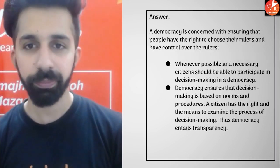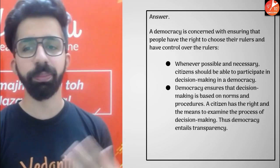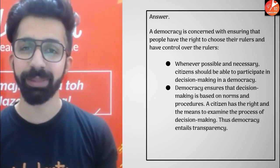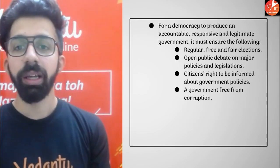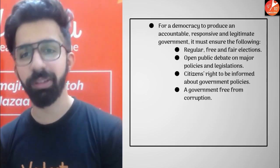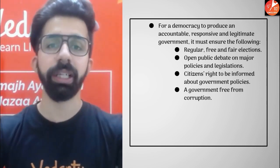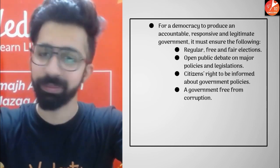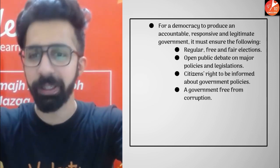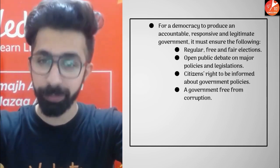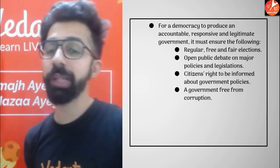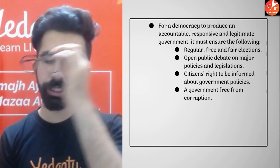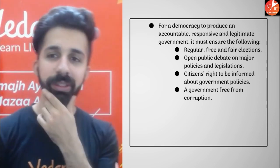Whenever possible and necessary, citizens should be able to participate in decision making in democracy. Democracy ensures that decision making is based on norms and procedures. For a democracy to produce an accountable, responsible, and legitimate government, it must ensure that regular free and fair elections are conducted — like in India, every five years elections are conducted in a free and fair manner by the Election Commission appointed by the President. Open public debate on major policies should take place. Citizens have the right to be informed about government policies and a government free from corruption. If all these things are achieved, then democracy will be accountable, responsive, and a legitimate government.